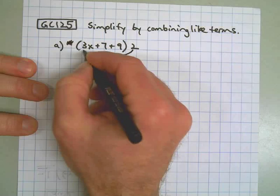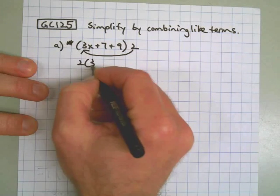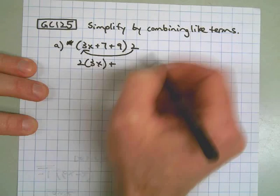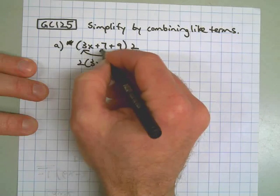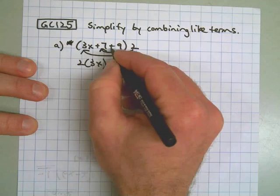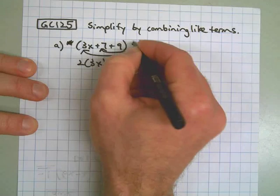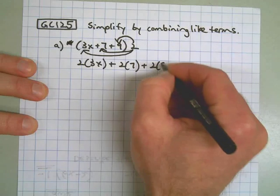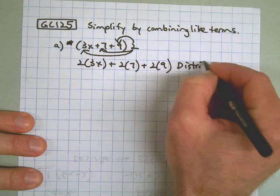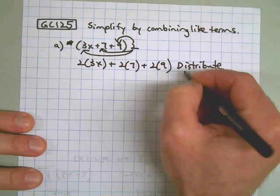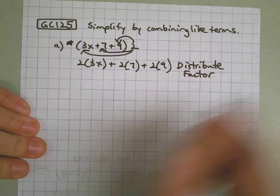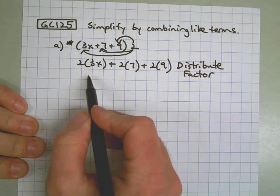So the first task we have is 2 times 3x. Then we bring this sign down — it's positive — then we have 2 times 7. We keep that sign, and we have 2 times 9. So there we've distributed the factor, meaning we took the 2 and multiplied it by each thing inside the parentheses. Now we have this in distributed form.